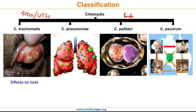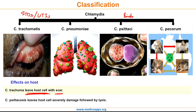Let me highlight an important MCQ point based on the difference in effect of C. trachomatis and psittacosis on their host species. C. trachomatis leaves the host cell with scarring, whereas psittacosis leaves the host cell severely damaged, followed by lysis.